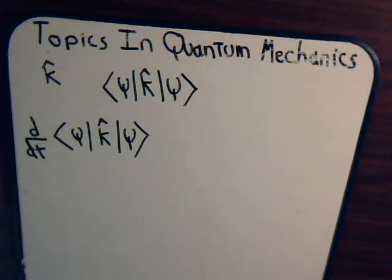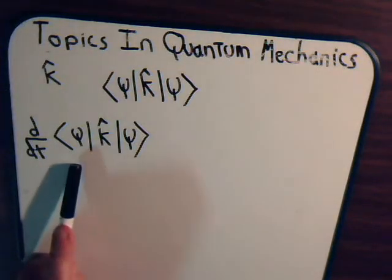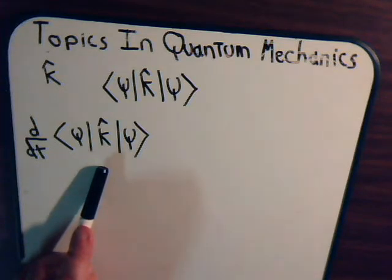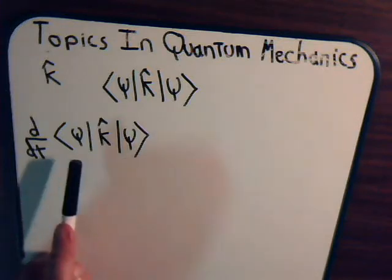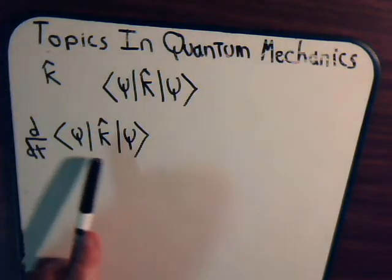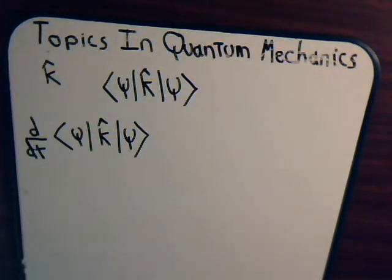This is the rate of change of the expected value of the observable. Now, in this quantity, K — the observable itself — does not change. What changes over time are the components of the state vector. So I want to determine our derivative here, and we can simply treat this as a product.